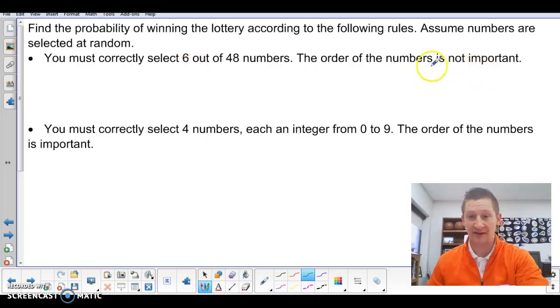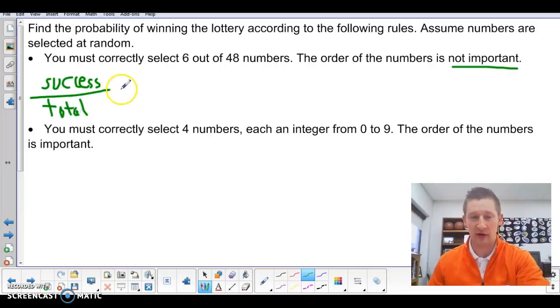The order of the numbers is not important, key thing, in just a moment. So as we think about this again, we have to think about the number of successful outcomes that we might have as we try to win the lottery and compare that to the total number of outcomes, the total number of ways that you could pick out 6 numbers from 48.